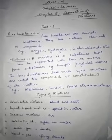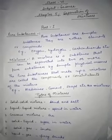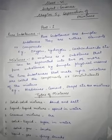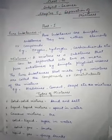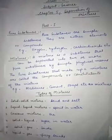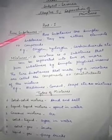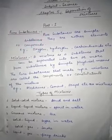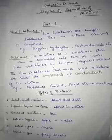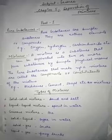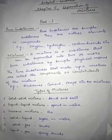Hello students, today we will study chapter number five of science and the name of the chapter is 'Separation of Mixtures'. First of all, what are pure substances? Pure substances are simple substances — they are either elements or compounds, like oxygen, hydrogen, or carbon dioxide. These are all pure substances.